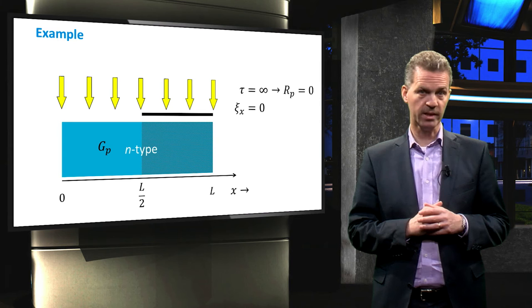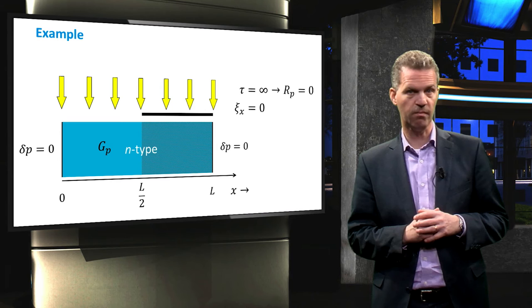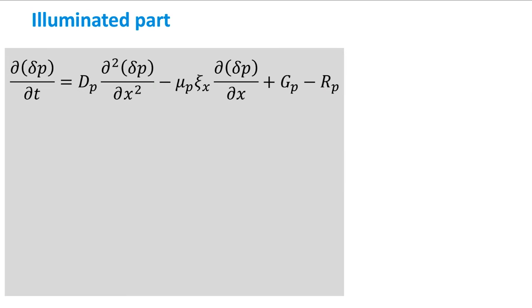For this example, we also assume that the electric field strength is zero. And finally, we take the excess carrier concentration to be equal to zero at the boundaries of the slab, which is often the situation at the interface between a metal and semiconductor.